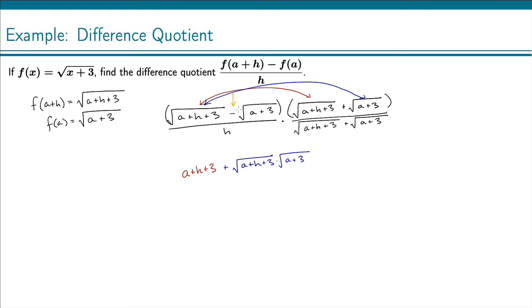Next, we move to the negative square root of a plus 3 and multiply it by the first term. Those are different square roots, so they don't simplify, and we have a negative, so that's minus the square root of a plus 3 times the square root of a plus h plus 3. Finally, the last terms: negative square root of a plus 3 times square root of a plus 3 — a negative times a positive — so that's negative. It's the square root of a plus 3 times itself, which is just a plus 3. And because that was negative, it's negative the whole quantity a plus 3, so we put parentheses there.